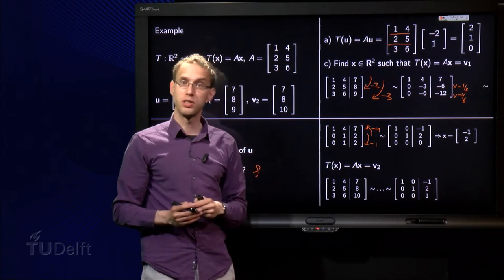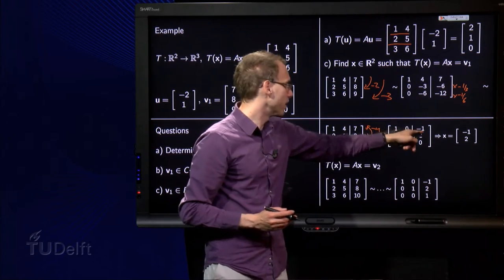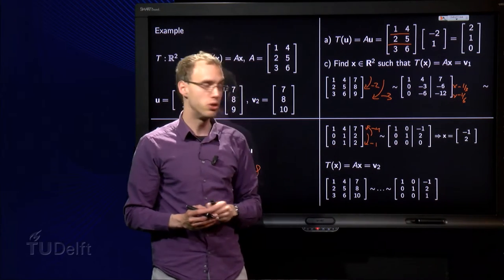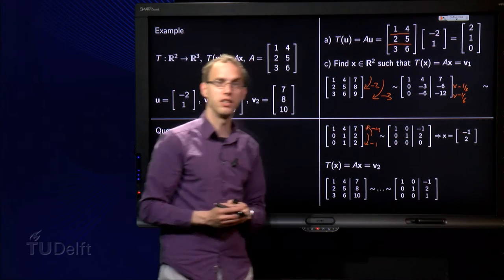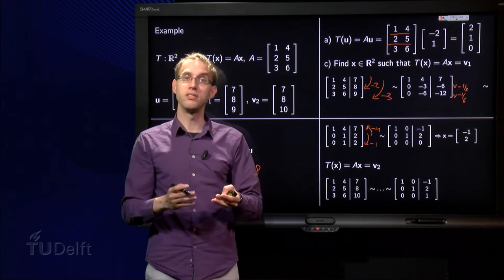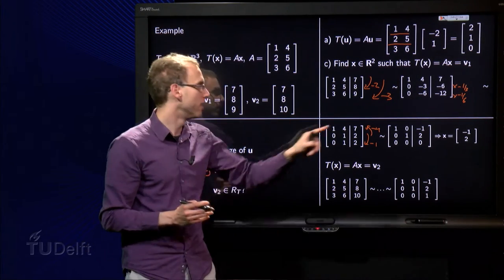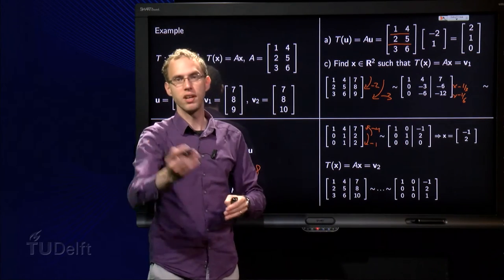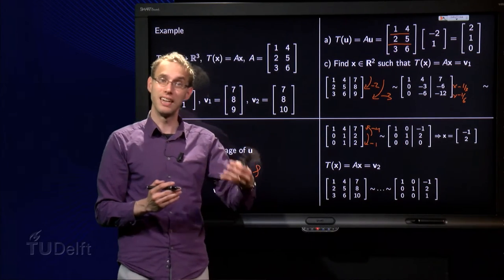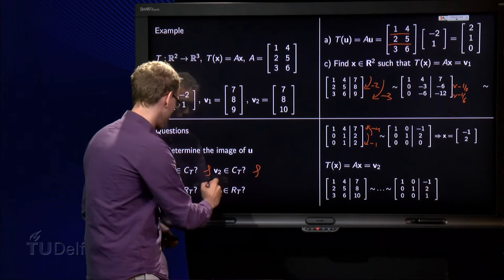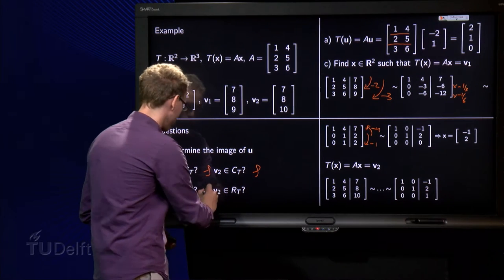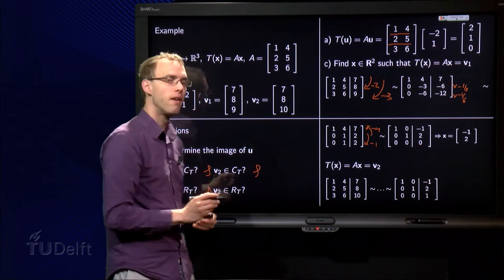0 times x1 plus 0 times x2 equals 0, and here we get x2 equals 2 and x1 equals -1. So indeed we have found an x which is mapped to [7, 8, 9]. The x equals [-1, 2] is mapped to [7, 8, 9], so that means that [7, 8, 9] is in the range of T.